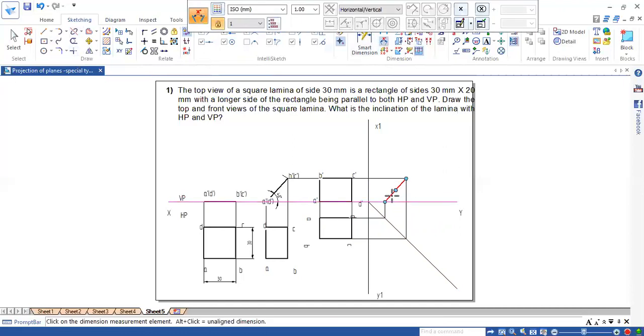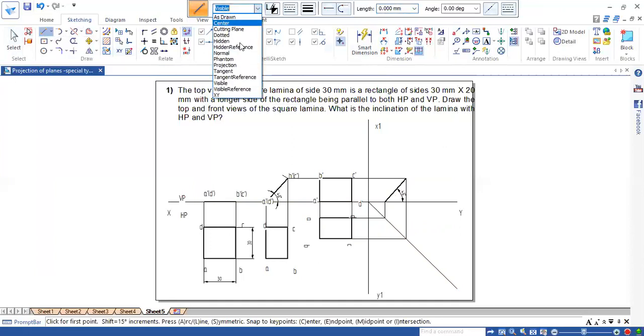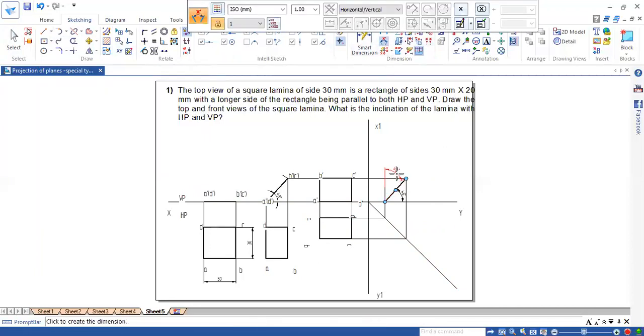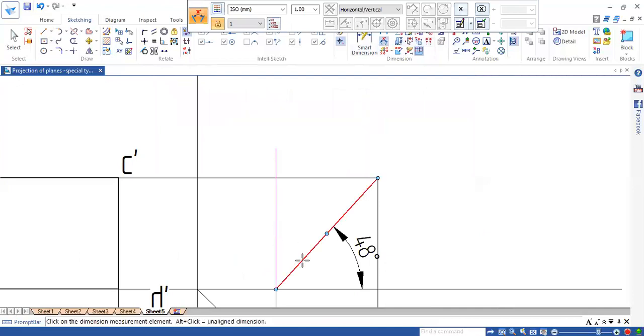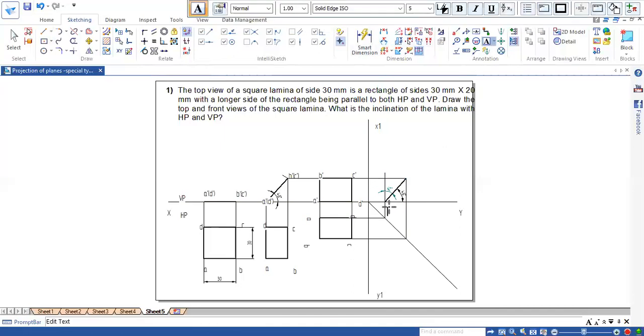Now measure the angle. 48 degree. Use the projection line. Measure the other angle. That should be 90 minus. So this should be 42V. So inclination with respect to HP is 48, inclination with respect to VP is 42. So now name this. So this is A double dash since it is a side view. A double dash will be within the bracket. You can see D double dash. C double dash in bracket B double dash.